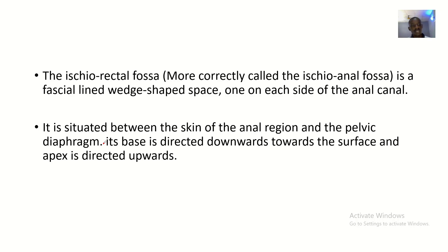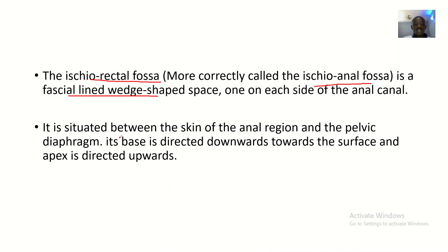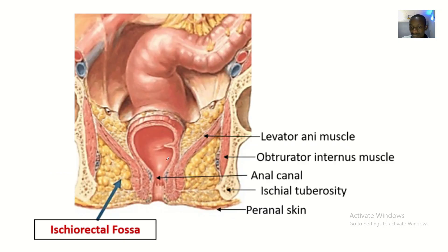The ischio-rectal fossa, more correctly called the ischio-anal fossa, is a fascial-lined wedge-shaped space — one on each side of the anal canal. It is situated between the skin of the anal region and the pelvic diaphragm. Its base is directed downwards towards the surface while the apex is directed upwards.